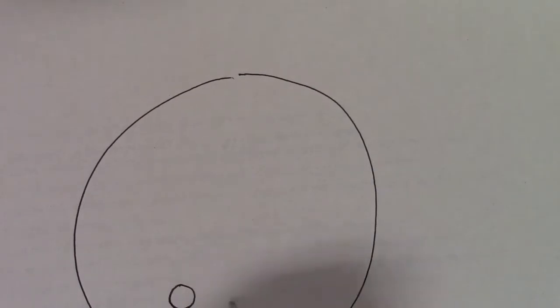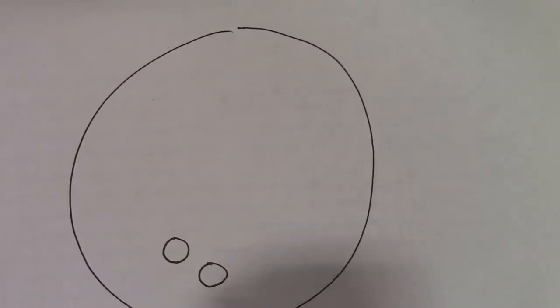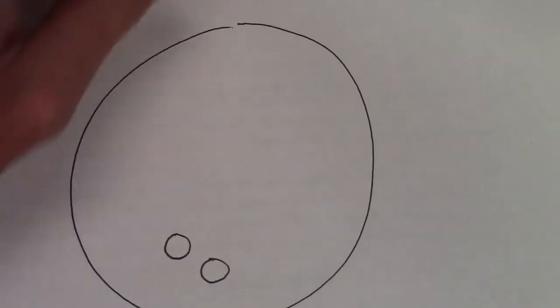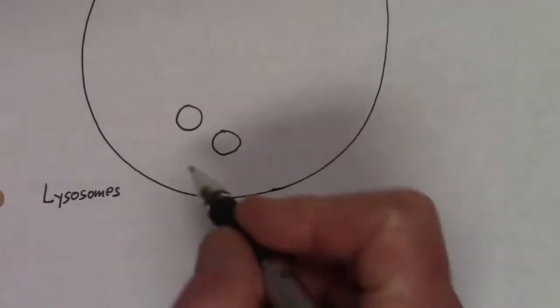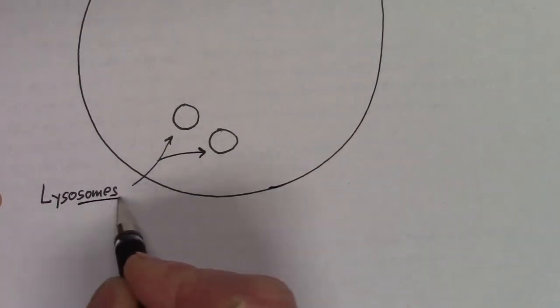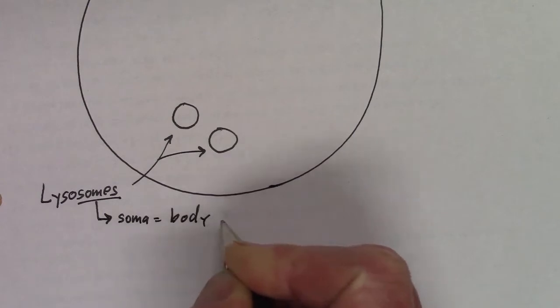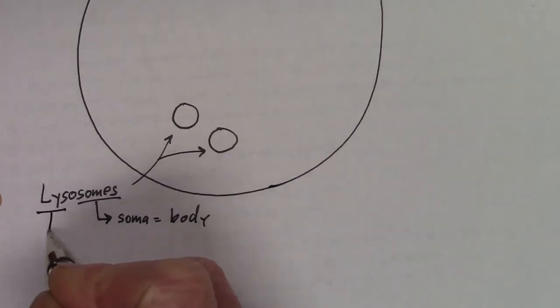Let's continue on with lysosomes. Lysosomes are another organelle inside the cell. They're usually drawn as little tiny vesicles inside the cell, again with a plasma membrane going around them. Breaking down the name: 'soma' means body — these are little tiny bodies inside the cell — and 'lysis' means to split.